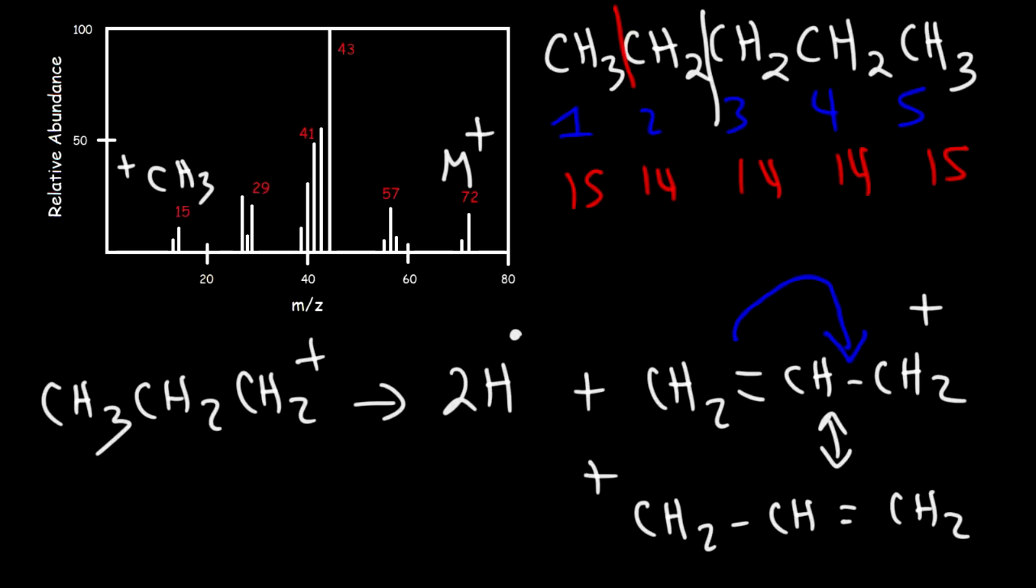If this has a mass to charge ratio of 43, and if we subtract 2 from that, then the mass of this particular fragment will be 41. You can add 14 - CH is 13 plus another 14 - that will give you an m/z ratio of 41.